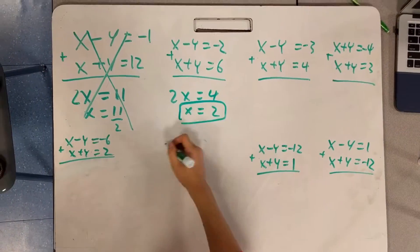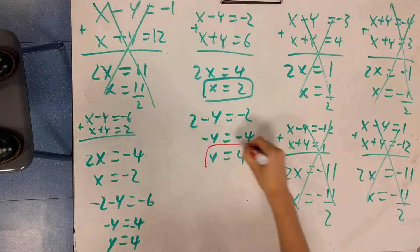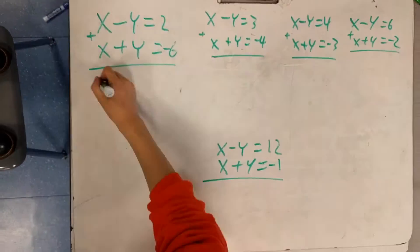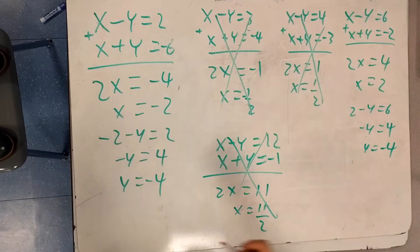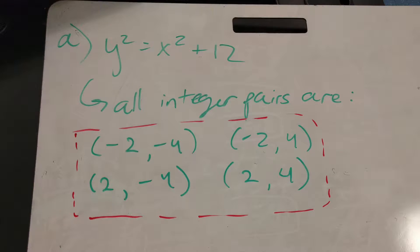Not all of these systems of equations work. For example, in order for y-x to equal negative 12 given the constraints, x would have to be a fraction. However, x is an integer, so this is not allowed. We obtain a total of four pairs of x, y that work.